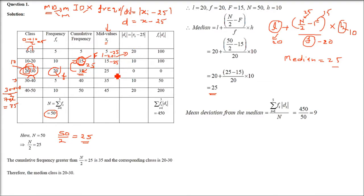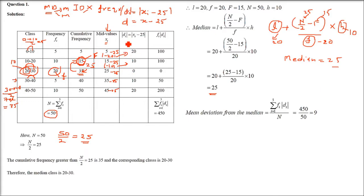The absolute deviations are: |5−25| = 20, |15−25| = 10, |25−25| = 0, |35−25| = 10, |45−25| = 20. This gives us the Di column.